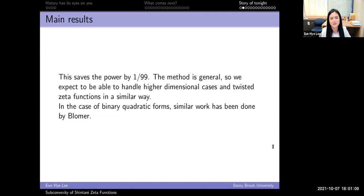Here's more discussion on the main result. The convexity bound in this case is one, so our result saves the power by 1/99. This result gives the highest degree example of a zeta function subconvex in the t aspect. The method we introduced here is general, and we expect to find subconvexity for Shintani's zeta functions over general prehomogeneous vector spaces. For now, we're working on the quartic case. The case of binary quadratic forms was done by Valentin Blomer.